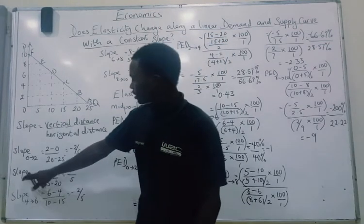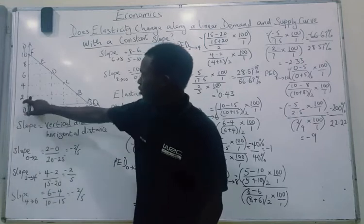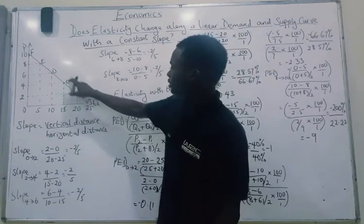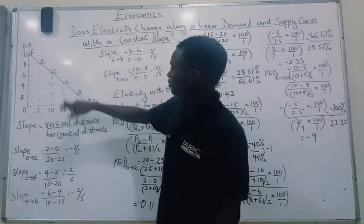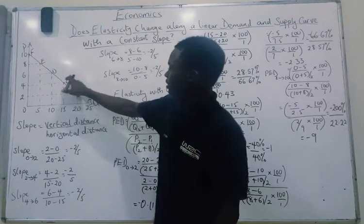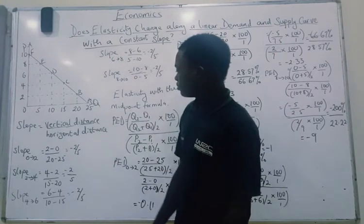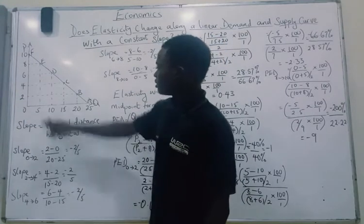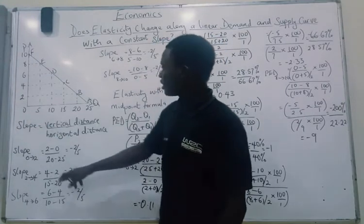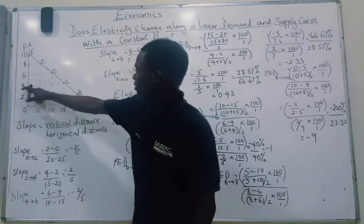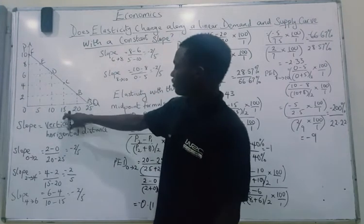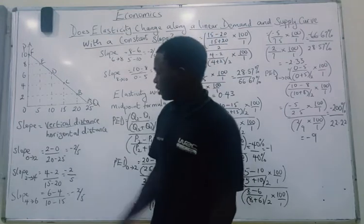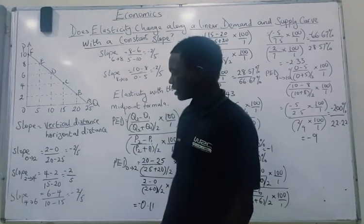When we check the slope from price 2 to price 4, that is triangle BCD. The new price is 4 minus the old price 2, divided by the new quantity 15 minus the old quantity 20. So we have minus 2 over 5 again as the slope.